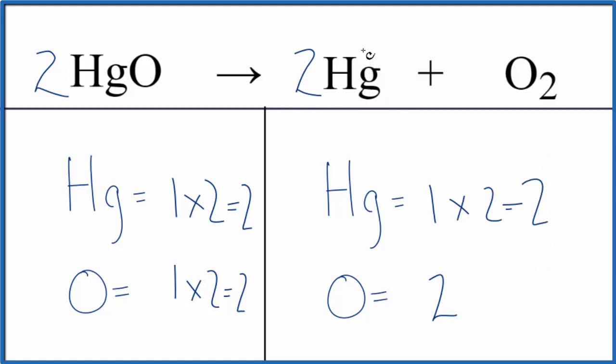If you wanted to write the states, that would look like this. This HgO, mercury two oxide, is a solid. We're going to have to heat this up. When we do, we'll get liquid mercury and oxygen gas.